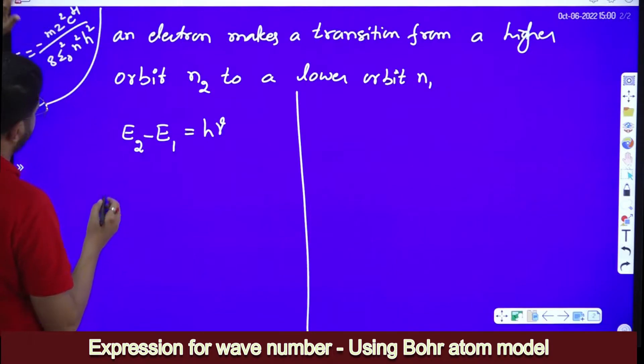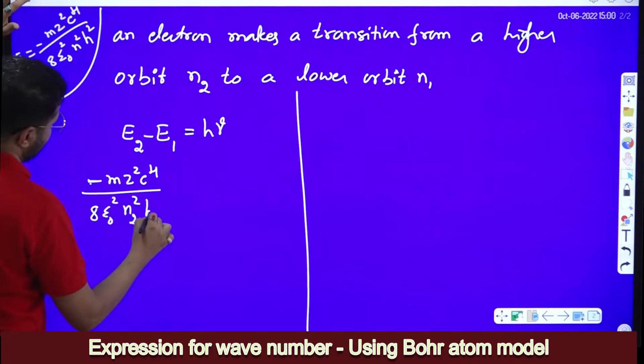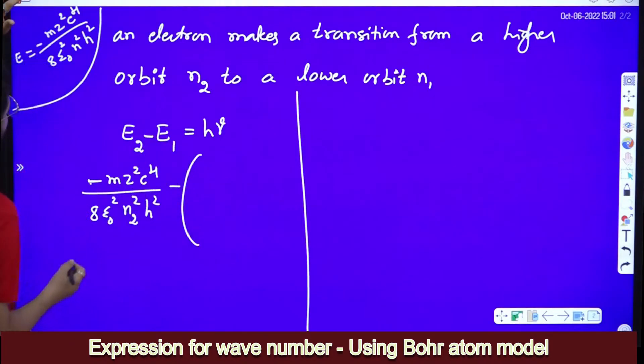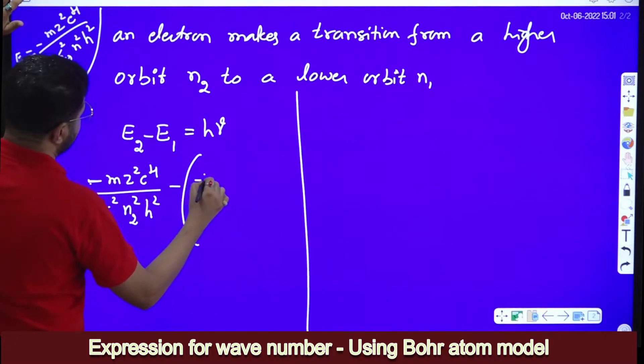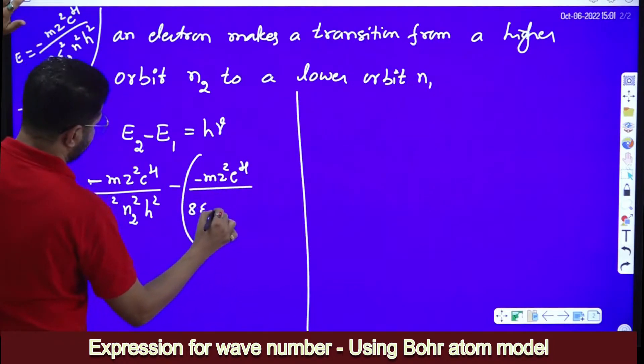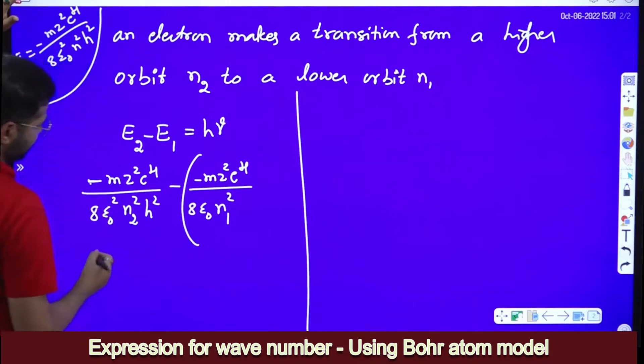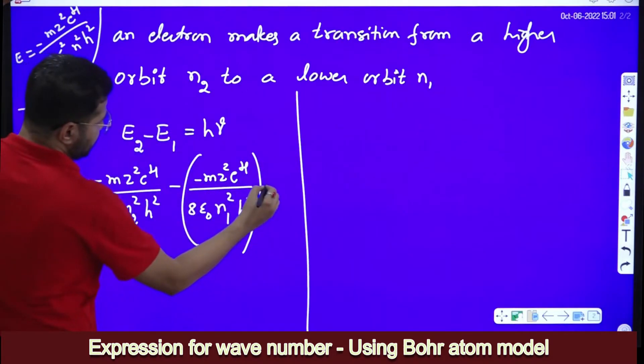E2 is equal to minus M into Z square E power 4 divided by 8 epsilon naught square n2 square h square minus, what is E1? E1 means minus M into Z square into E power 4 divided by 8 epsilon naught square into N1 square into H square, where E1 is the energy corresponding to orbit N1, E2 is the energy corresponding to orbit N2 is equal to h nu.